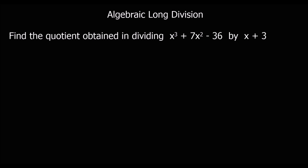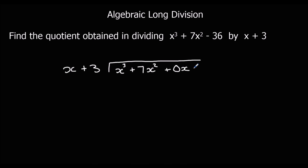Here's another question: find the quotient obtained in dividing x cubed plus 7x squared minus 36 by x plus 3. We need to be careful because it has no x term. In place of the missing x term we put 0x as a placeholder — you can't have any terms missing. It must go x cubed, x squared, x, and constant number, all in order with none missing.